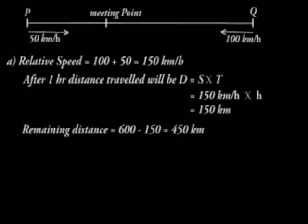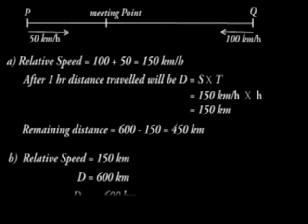The relative speed we've seen is 150. Total distance is 600. The time taken is 600 kilometers over 150 kilometers per hour, which gives us 4 hours. The vehicles will meet after 4 hours.